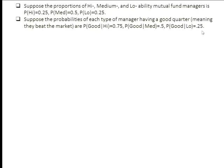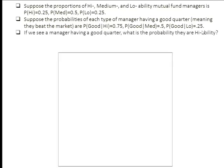So if I observe a good outcome — if I see a manager having a good quarter — and I'm hoping to invest in a mutual fund managed by a high ability manager, what I want to know is: if I see a fund manager have a good return for one quarter, what's the likelihood that signal was generated by an actual high ability manager? The set of events we're starting with is all possible events that would have generated a good outcome signal, and what we want to know is what proportion of those events are generated by a high ability manager.